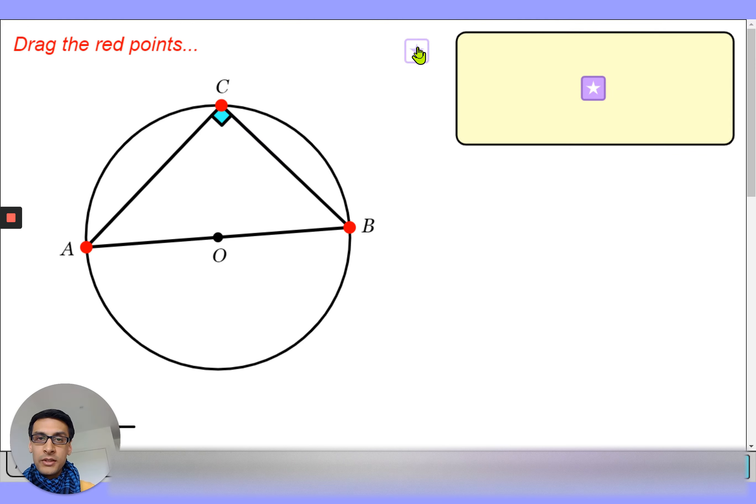The first theorem is the fact that this angle here always has to be 90 degrees, and you can summarize it as the angle in a semicircle—so there's your semicircle here at the top—is always a right angle.